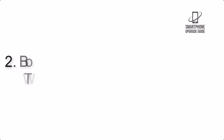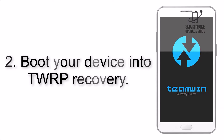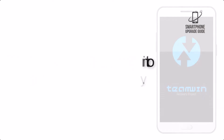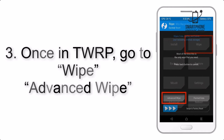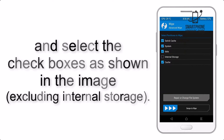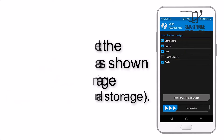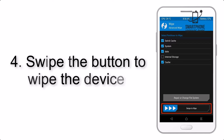Step 2: Boot your device into TWRP recovery. Once in TWRP, click on Advanced and select the checkboxes as shown in the image, excluding internal storage. Step 4: Swipe the button to wipe the device.